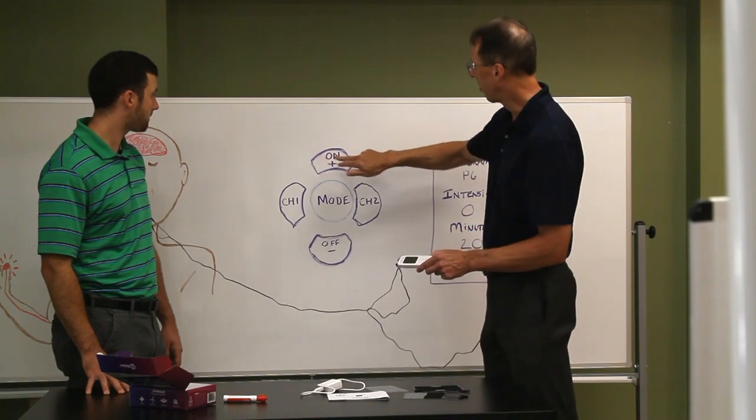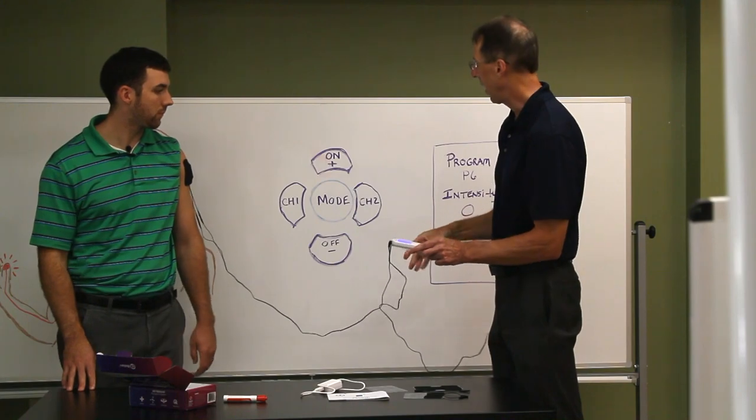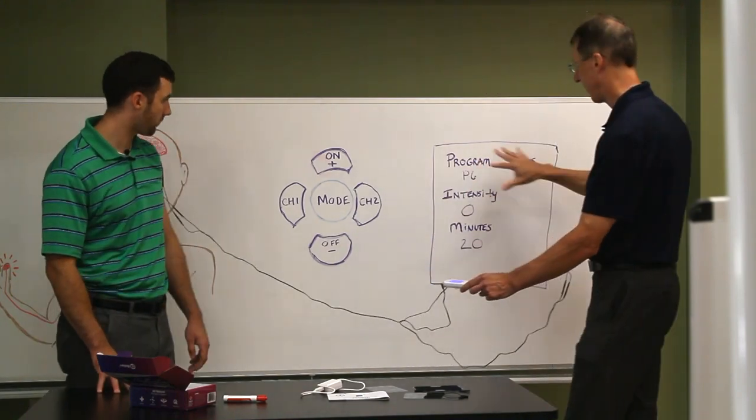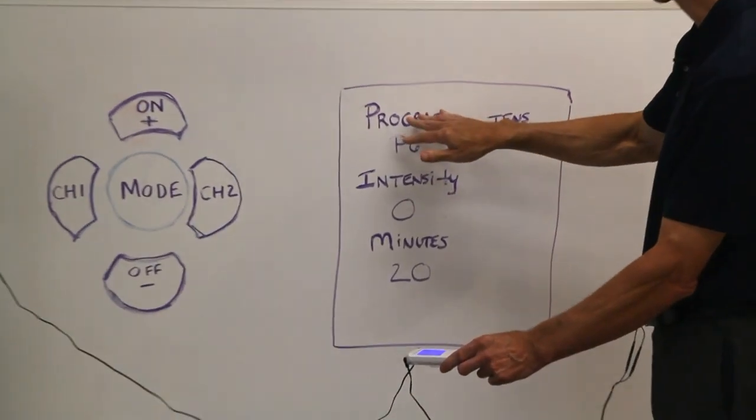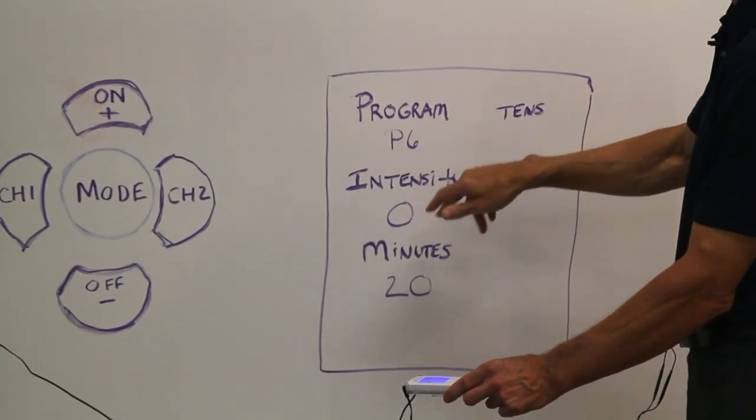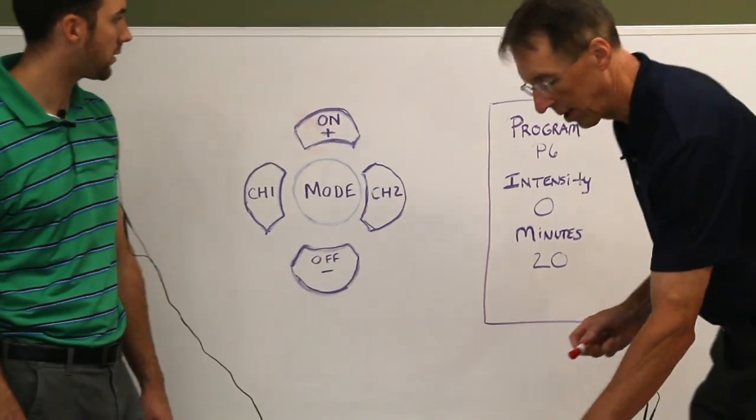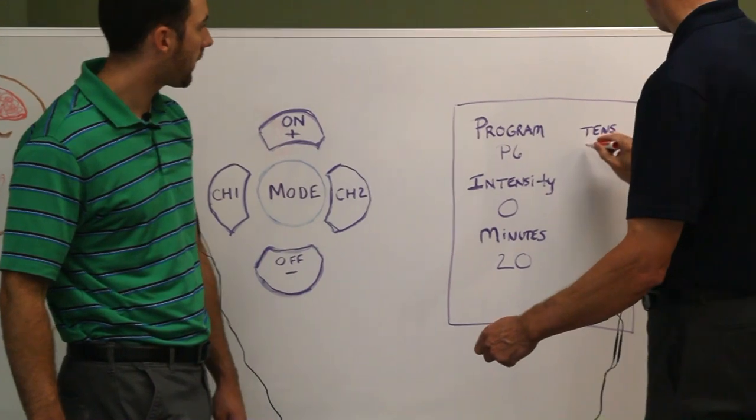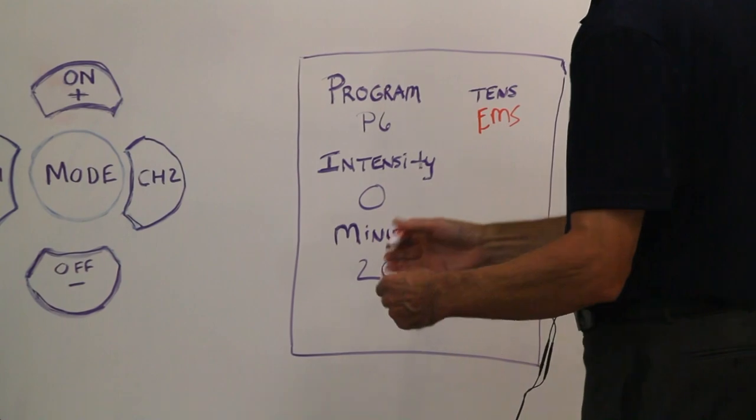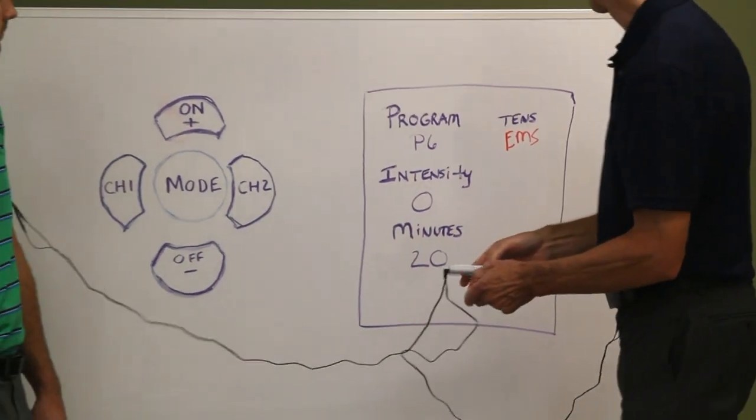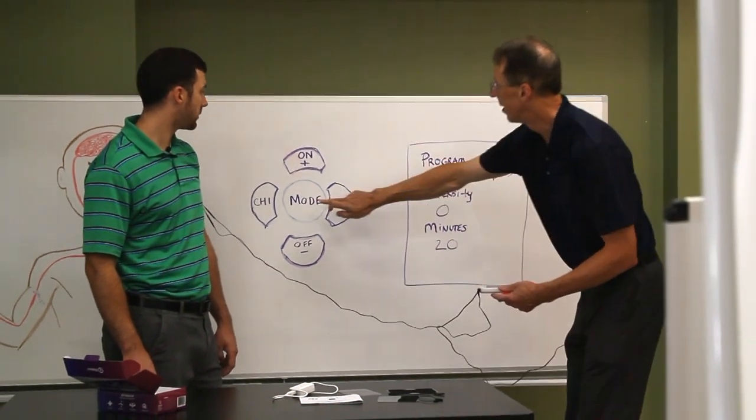So anyway, what you're going to do - you're going to go ahead and you're going to push the on button and hold it for three seconds. I'm going to do that right now. And up pops this screen. And you're going to see program, P6, intensity. Well, program you're going to see in a number, intensity zero, and minutes. And right up here actually it's going to say TENS and EMS, electrical muscle stimulation. And what you can do, it's going to say one or the other, and you can actually hit mode.